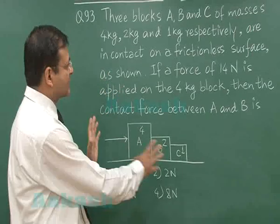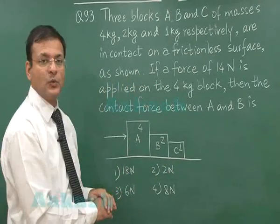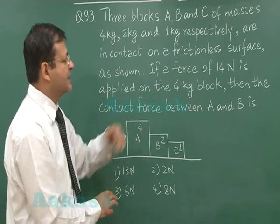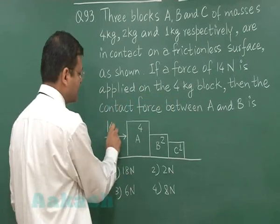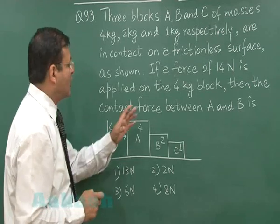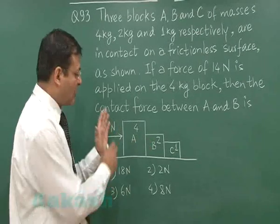And they are in contact on a frictionless surface. If a force of 14 Newton is applied on the 4 kg block, like they have shown in the arrow, this 14 Newton force has been applied here. Now, they want the contact force between A and B.